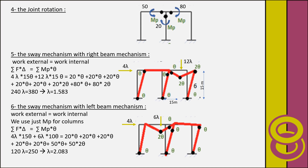Then lambda equals for the joint rotation step, which is used together with the previous mechanisms to form the elementary mechanism. In step five — sway mechanism with right beam mechanism — we use the same equation and follow the procedure. Lambda equals 1.583. Then for the sway mechanism with left beam mechanism, work external equals work internal, and lambda equals 2.083.